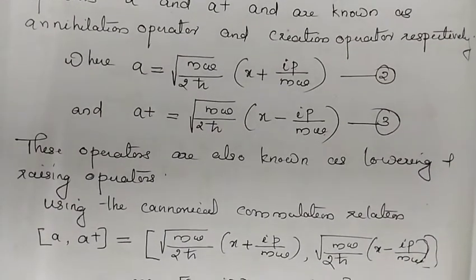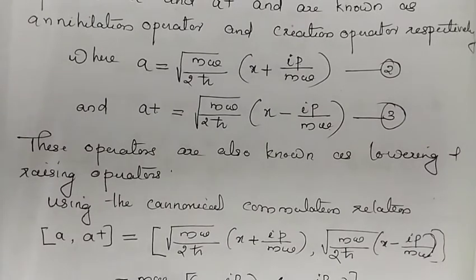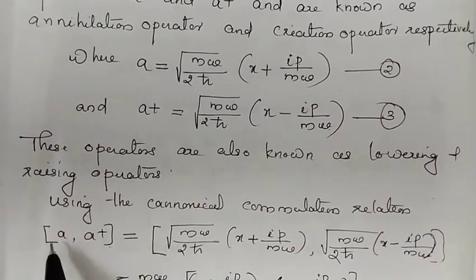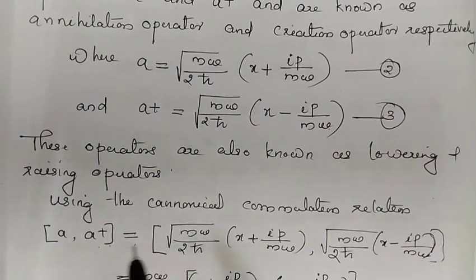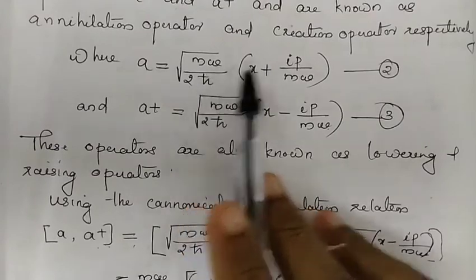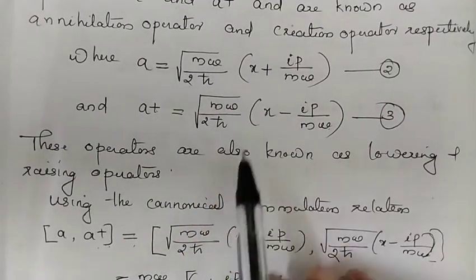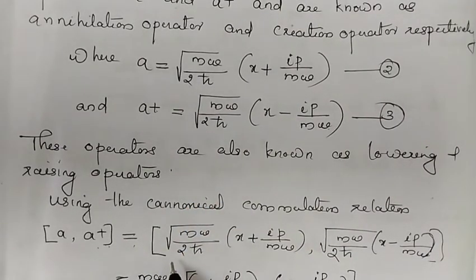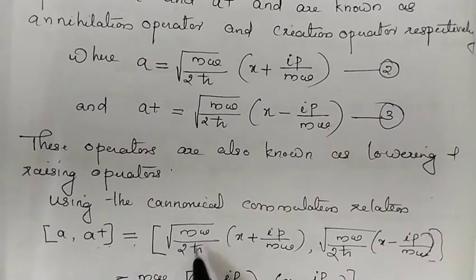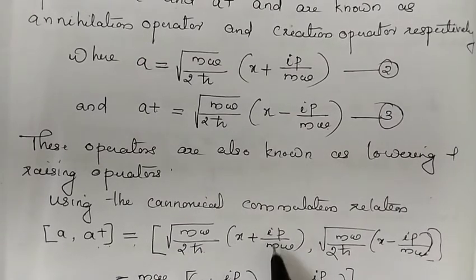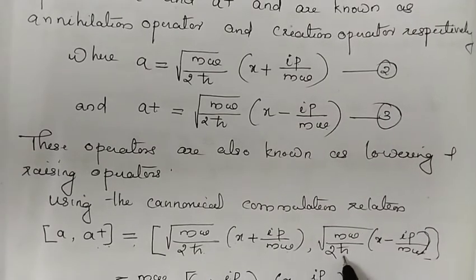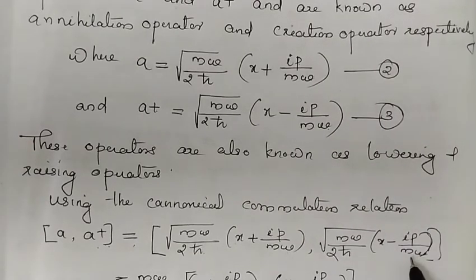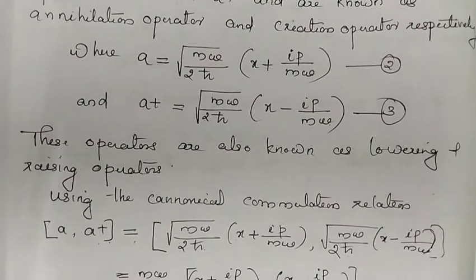Using the canonical commutation relation, we evaluate the commutation relation between a and a-dagger. We substitute the values: the commutation between root of m omega divided by 2h-bar into x plus ip by m omega, and root of m omega by 2h-bar into x minus ip divided by m omega.